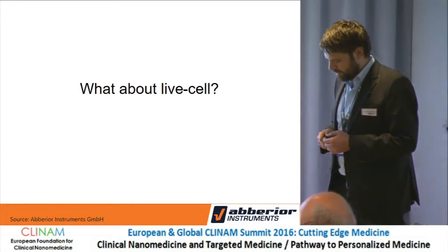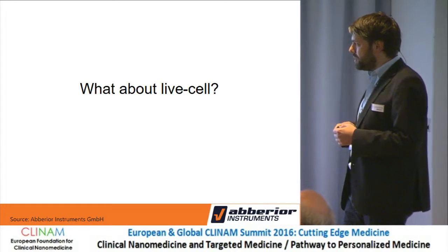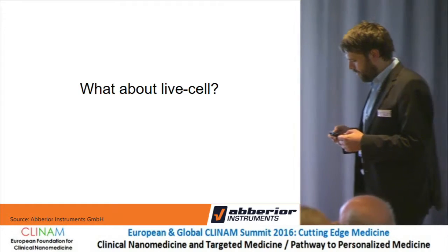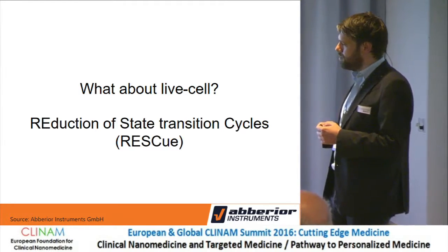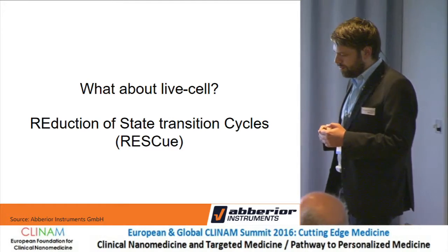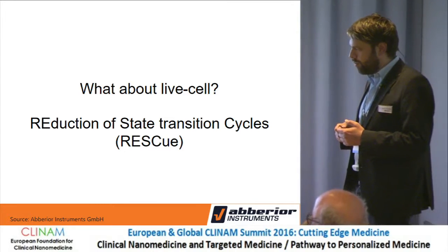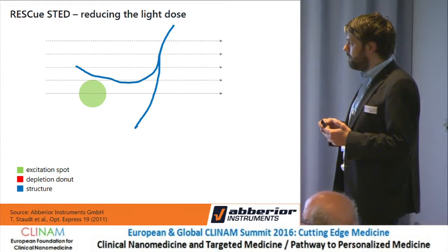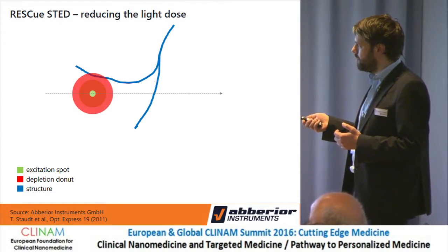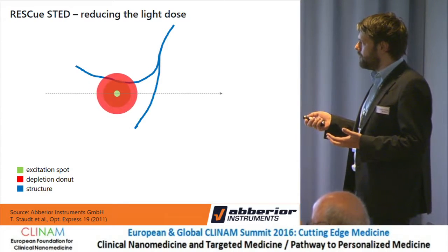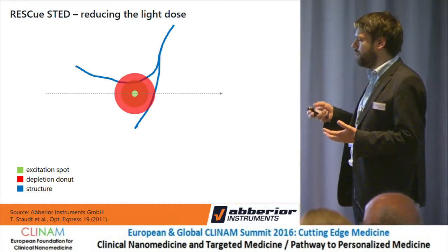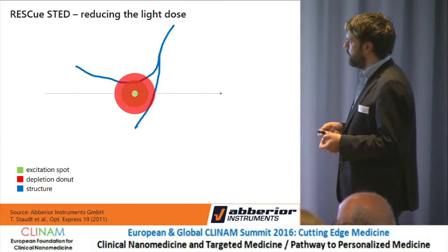The second thing I wanted to talk about is what we can do about live-cell imaging, which is of course important but very challenging from optics and labeling points of view. One thing that we have commercialized is a method called RESCUE, which is an intelligent laser switching scheme that tries to avoid unnecessary light exposure to the samples. Usually we have the excitation spot and additionally the donut spot, and if you raster scan your sample, all the lasers are on all the time. You can see we cross structures here and they are exposed and stressed, potentially photobleached or triggering phototoxic reactions.